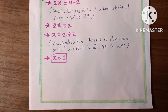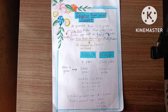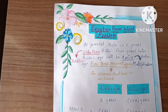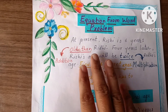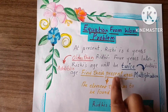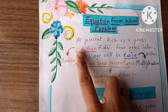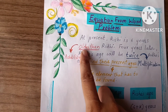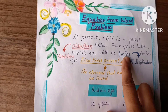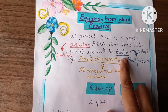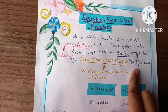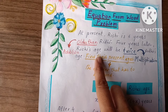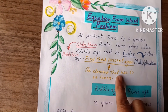Let's see the next page — equation from word problem. This page shows how to interpret word problems. Words like 'older than' and 'twice' — 'older than' means addition; 'twice', 'thrice', 'three times', 'four times', 'five times' means multiplication. We also need to find the unknown element — the element that has to be found.